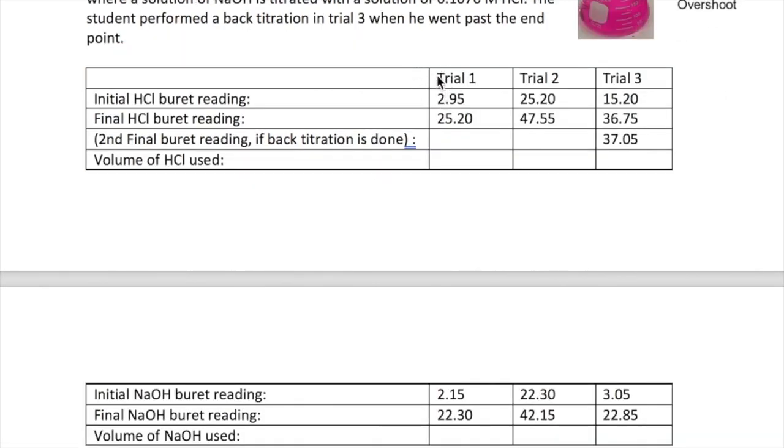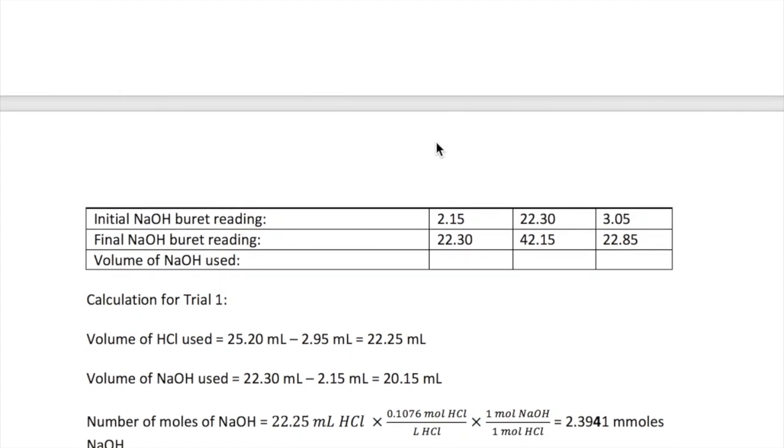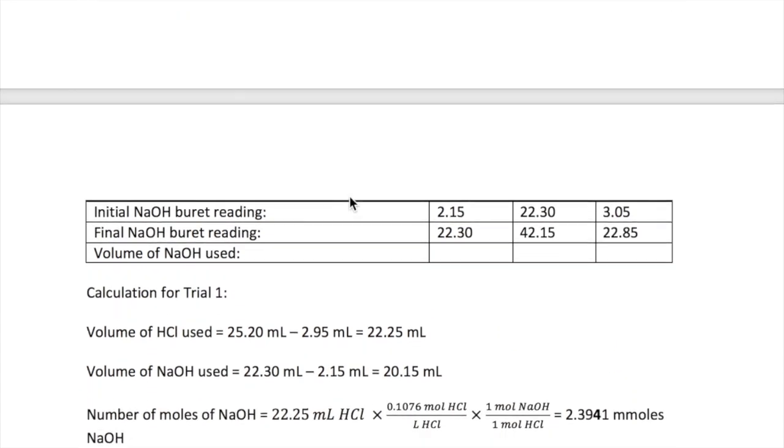So, let's show how the calculation is done for trial one. First, we calculate the volume of HCl, which is just subtracting final minus initial volume of HCl, giving us 22.25 mL. We do the same thing with NaOH. We get 20.15 mL.